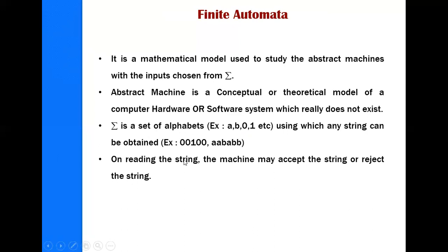After reading the string, the machine may accept or reject the string. For example, upon reading the input string 0, 0, 1, 0, 0 — that is the string '00100' — the abstract machine automata has accepted that string.